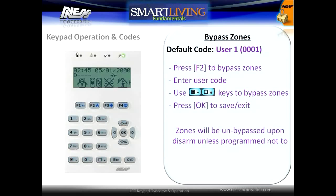To bypass zones, press the F2 key shortcut and enter a user code. Use the check option keys to bypass the zones and press OK to save.